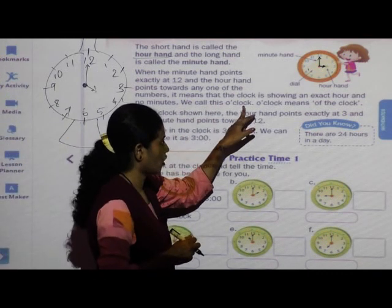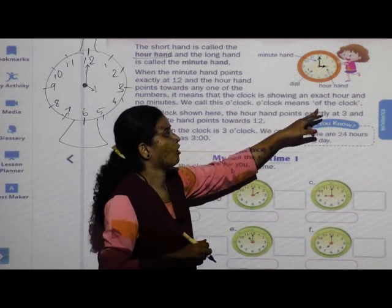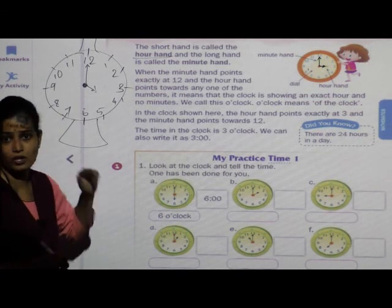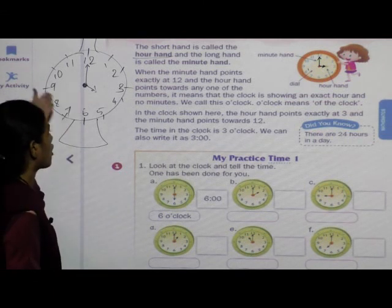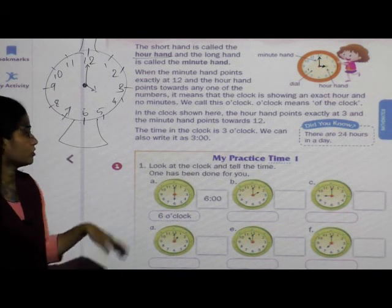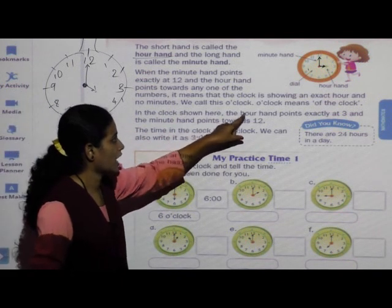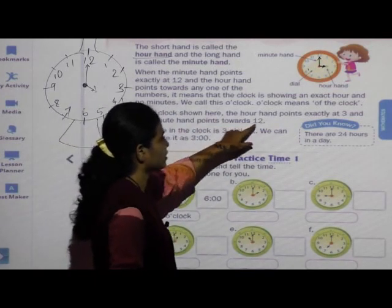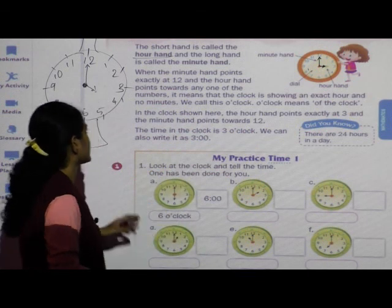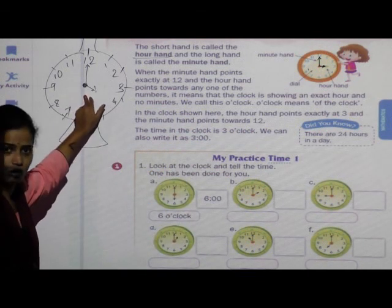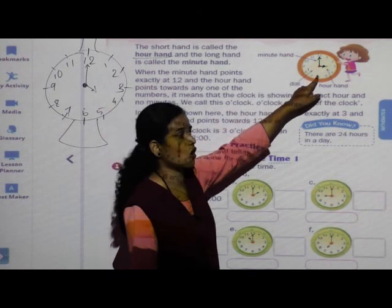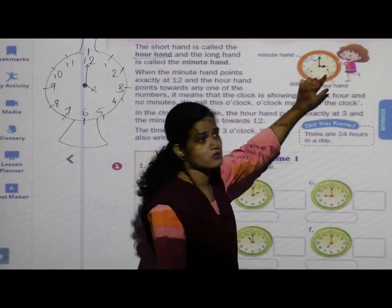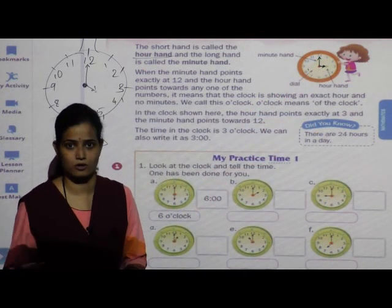We call this an o'clock reading. In the clock shown, the hour hand points exactly at three and the minute hand points towards twelve, so the time is three o'clock. Minute hand twelve pe hi hona chahiye. Our hand — yeh jo chhota hath hota hai — woh koonse bhi number pe ho, lekin minute hand jab twelve pe hota hai, tabhi utne hours bata sakte hai.